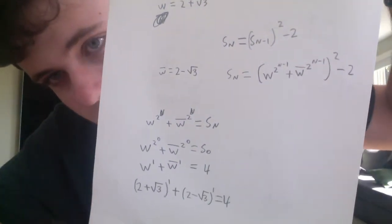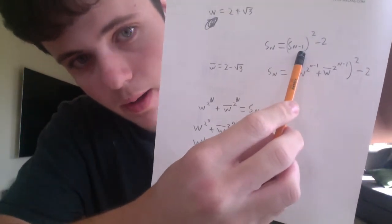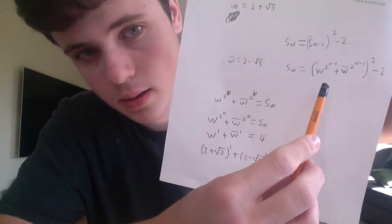Now we can expand this out. Remember, it's not just the first term squared plus the second term squared — it's the first term squared plus the second term squared plus 2 times the first term times the second term. So we expand the square of (W^(2^(n−1)) + W-bar^(2^(n−1))), giving us three groups of terms, and then subtract 2.